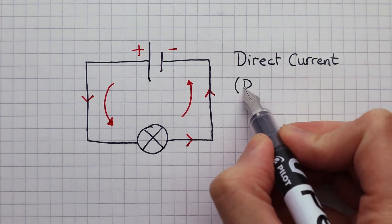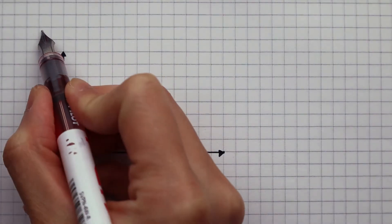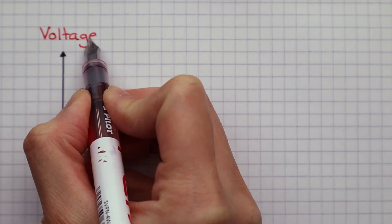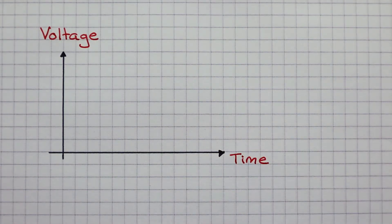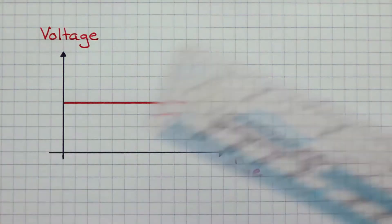And the size of the voltage is always the same. It's constant. To represent a direct current on a graph, we have voltage and time. This straight line shows a constant voltage that is only going in a single direction.